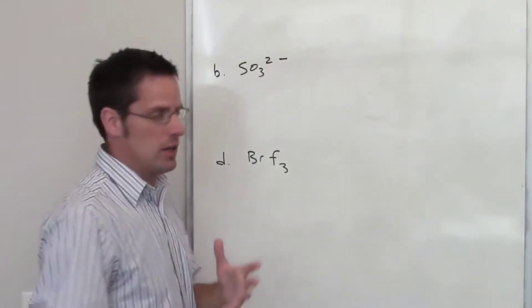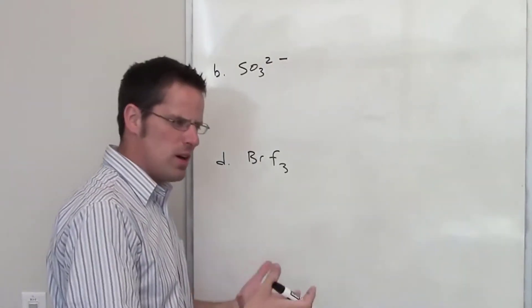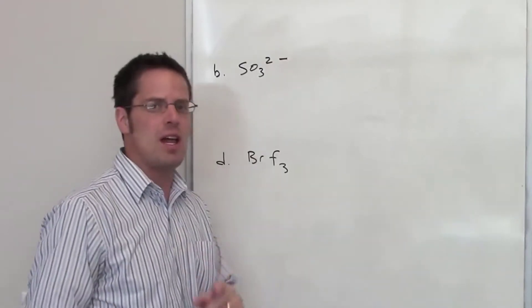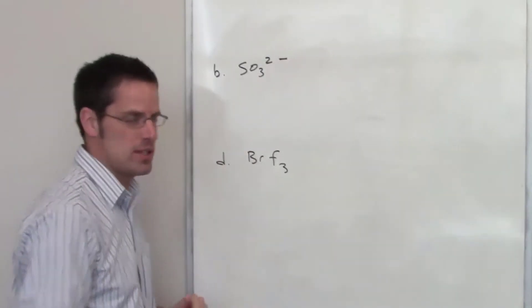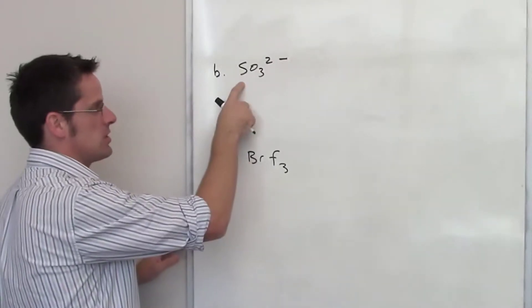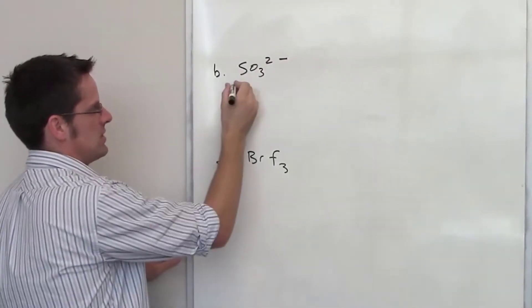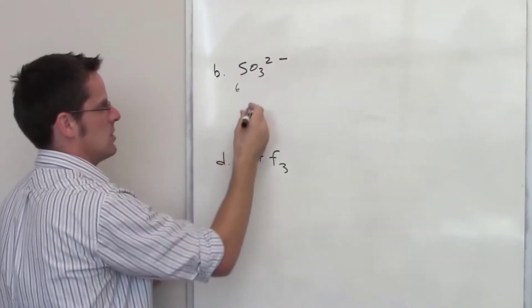As I discussed earlier, in order to determine or draw a molecule's Lewis structure, we first of all have to count out how many total electrons there are in the system. Sulfur is in column six of the periodic table, so it has six valence electrons, as is oxygen.